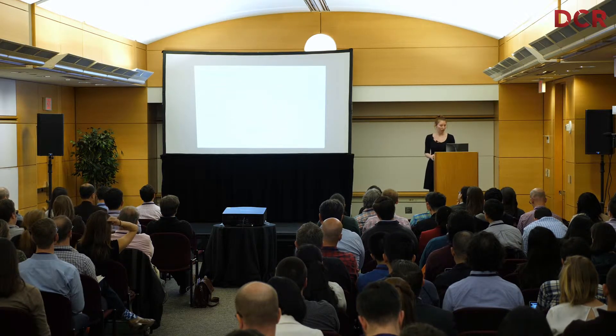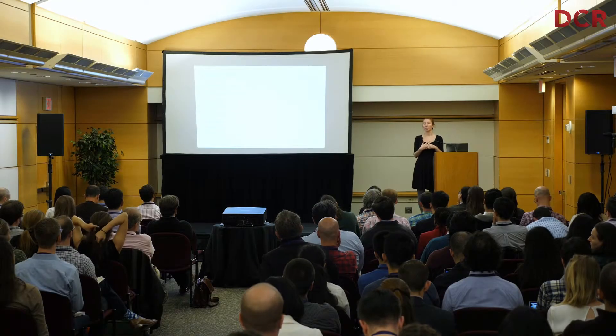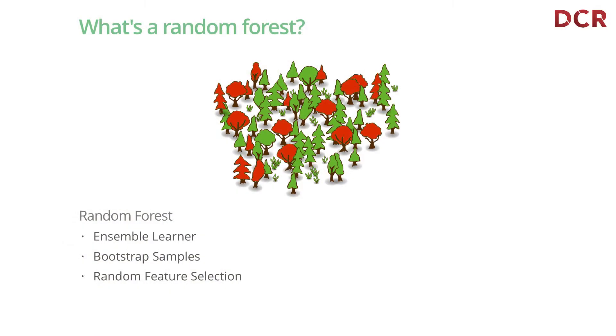So the question is: how can we eliminate those selection filters? What we want at the end of the day is a similar group — we want to find those inherent selection filters that led to our chosen portfolio. The keyword here is similarity, which points to a more or less obvious solution: using proximity scores from Random Forest.